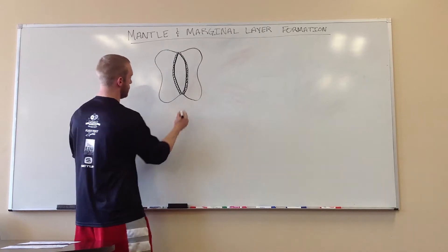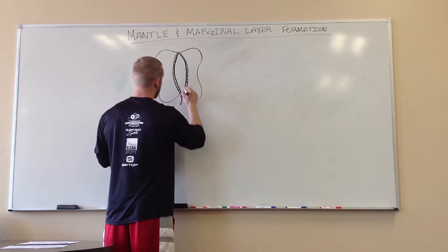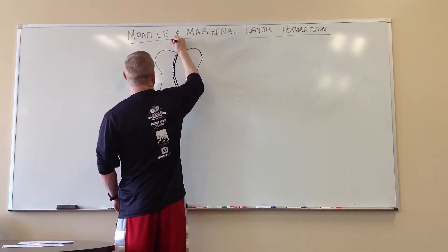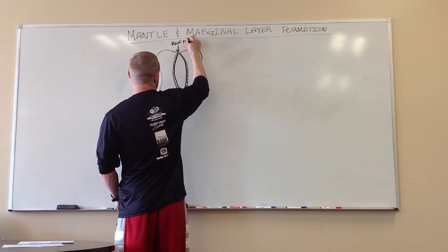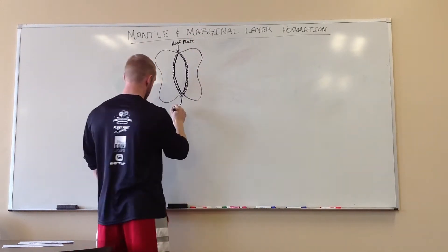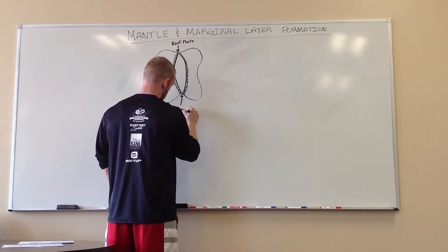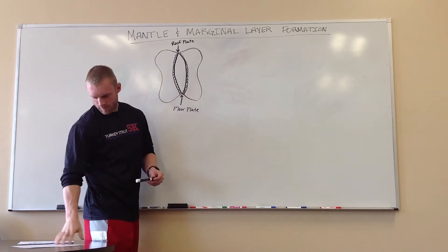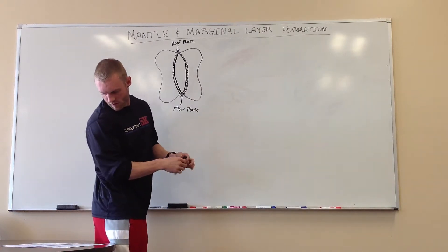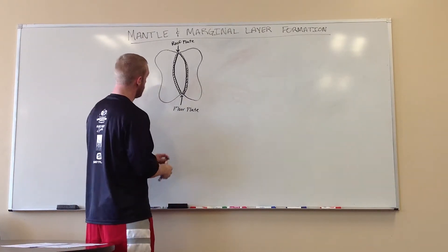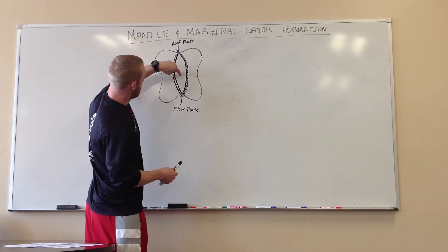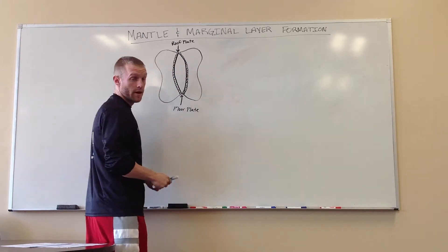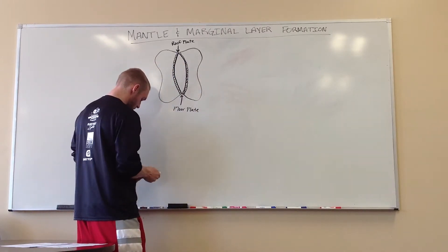I'm going to label some things we don't really need to know. This is the roof plate — you don't need to know that — and this is the floor plate. This is pretty much our neural tube canal; it's black here, but this would be you looking straight down and seeing just a hole.